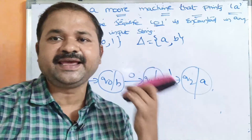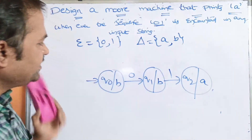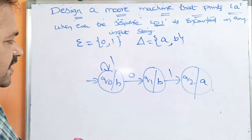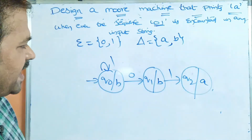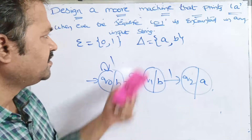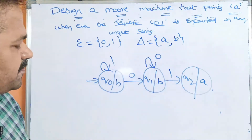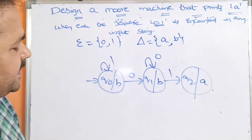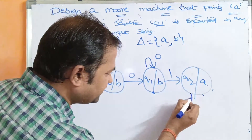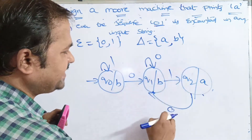In a DFA, each state must use all symbols in the alphabet. On Q0, only 0 was applied so we also need to apply 1 — before 001 we can have any number of 1s, so Q0 on 1 stays at Q0. On Q1, 1 is already applied; applying 0 on Q1 stays at Q1 as a self-transition since 0 starts a new potential 001 sequence. On Q2, transitions for both 0 and 1 are needed.